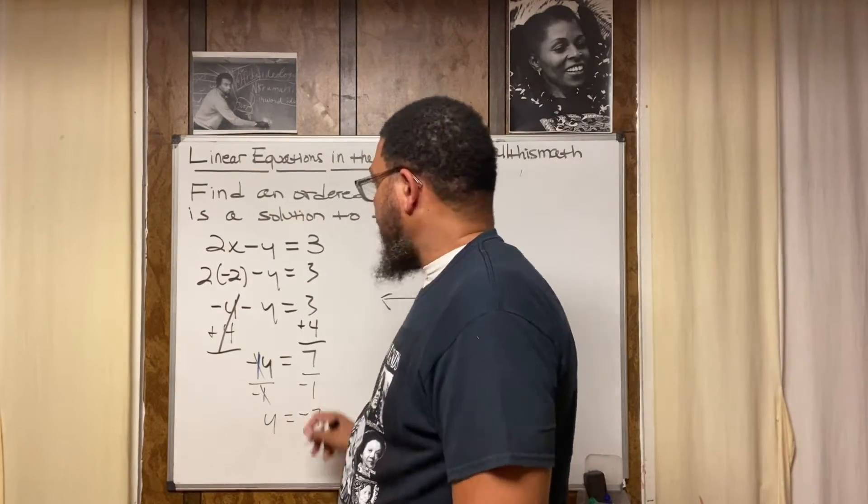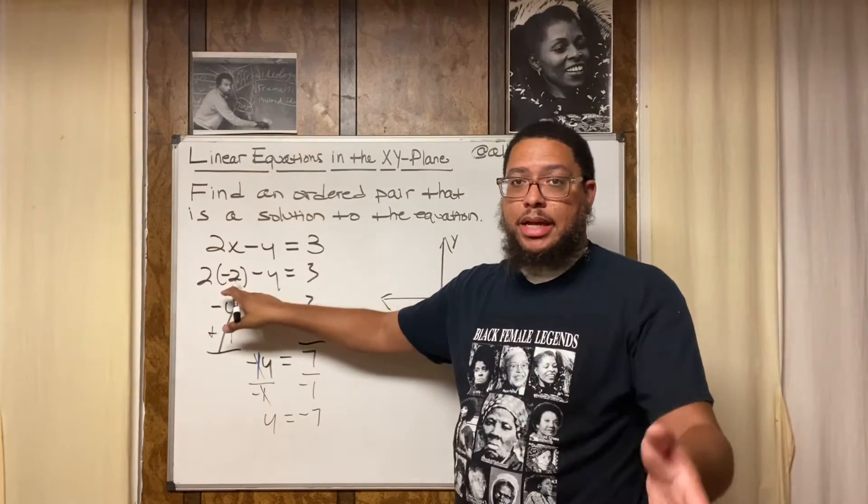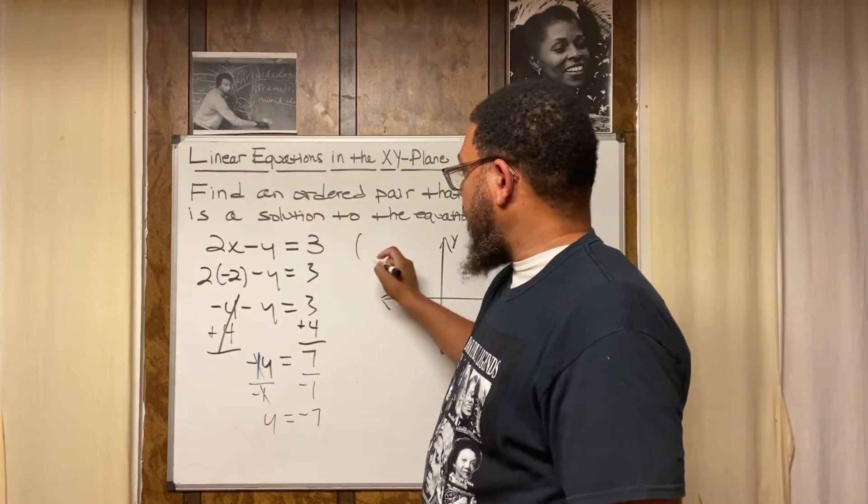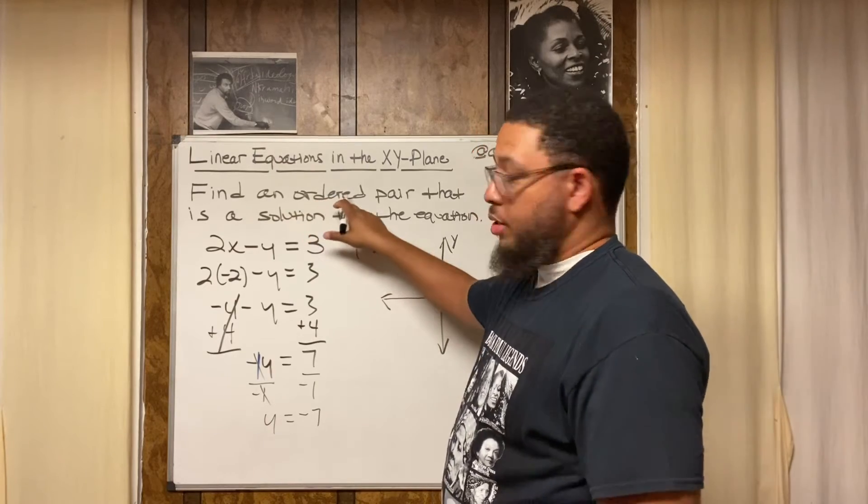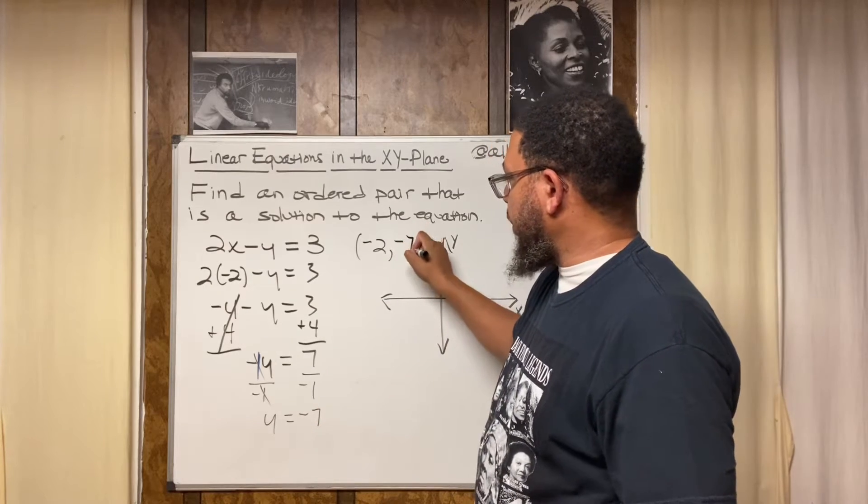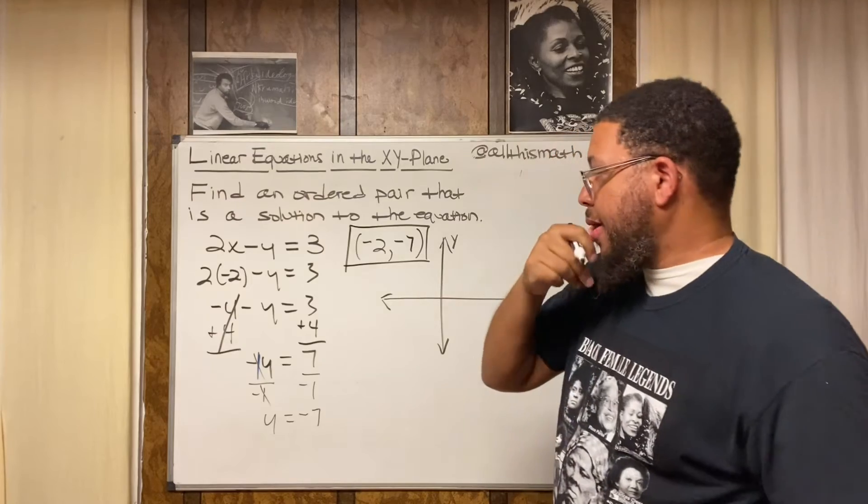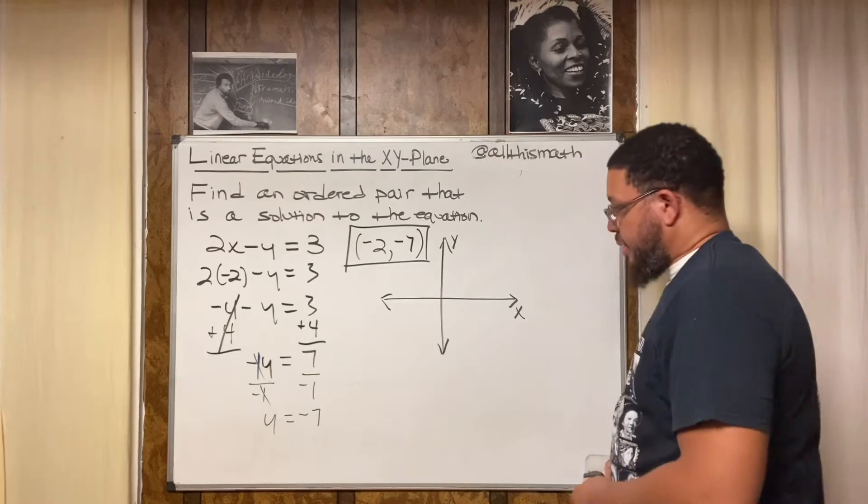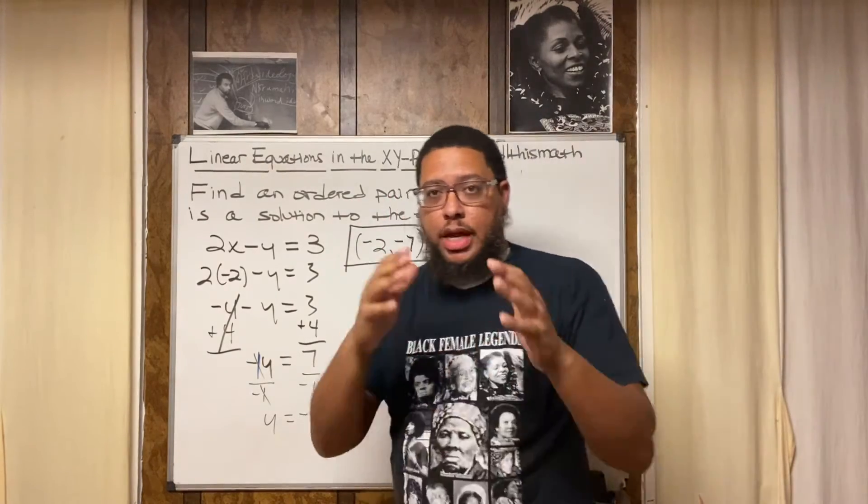So that means my ordered pair, because I chose negative two for x from the beginning and my y value is negative seven, I write it with your x value first because it goes in order, alphabetical order, your x value first and your y value second. Don't forget your negative signs. This is your answer right here: negative two, negative seven.